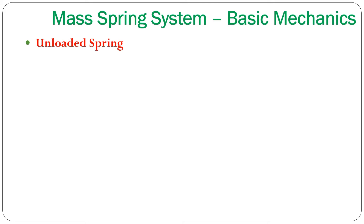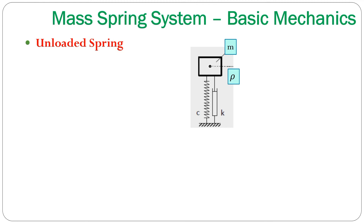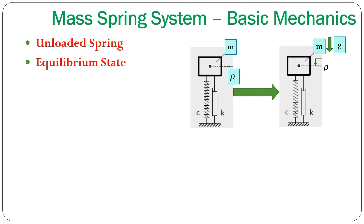Let's start with some basic mechanics. In this diagram, we see a mass with spring and dampers in an unloaded situation, so there is no load on the spring. From experience, as we know, this is quite an impossible state. Practically, we have gravity due to which the mass would be lowered. Then we have a certain preload on the spring, let's say Rho. Depending on whether there is motion or not, we will also have damping in the system.